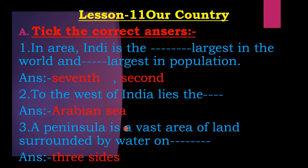Third question: A peninsula is a vast area of land surrounded by water on the dash. The answer is three sides.